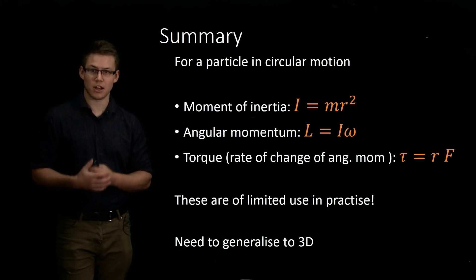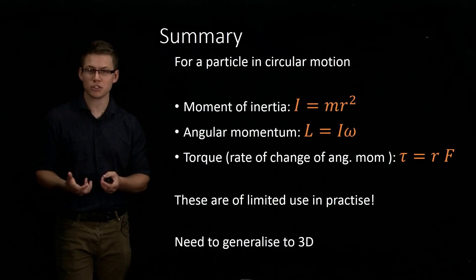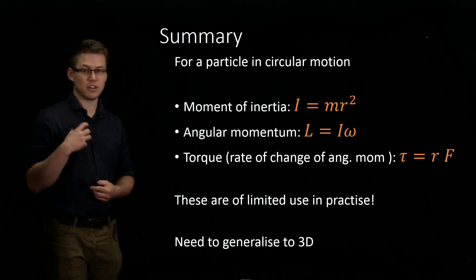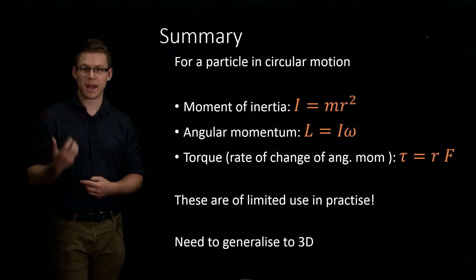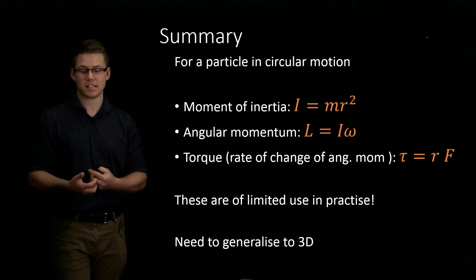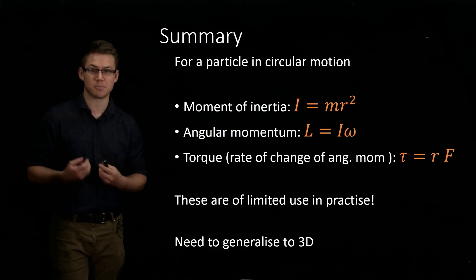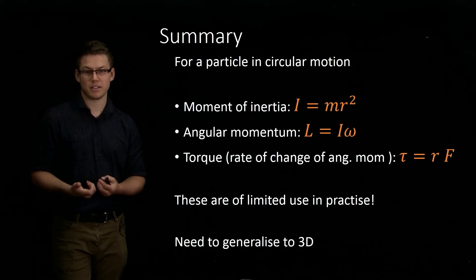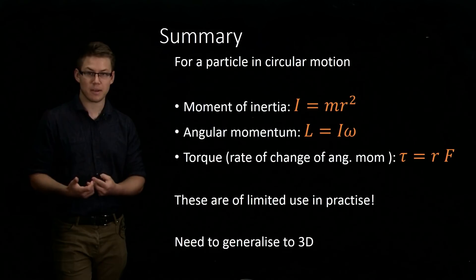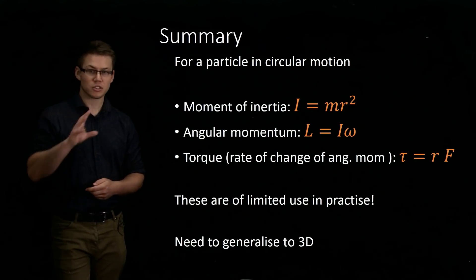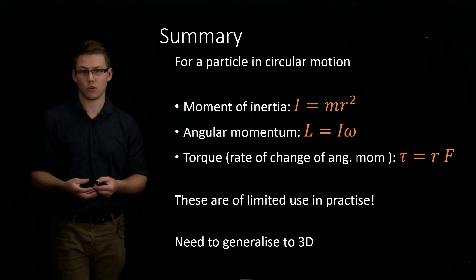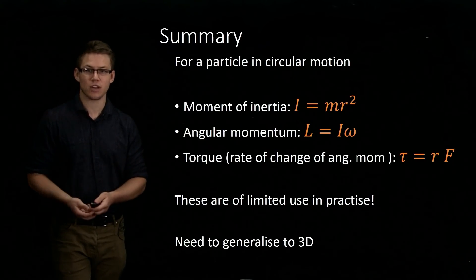Summary: we're just thinking about a particle in uniform circular motion, not worrying about vector quantities, to get an intuitive picture. The moment of inertia I equals mr² for this system and plays the role of a kind of mass. Angular momentum equals I times omega, and in analogy with standard linear momentum it captures both the mass of the system and how fast it's spinning. Finally, we have torque, which is the rate of change of angular momentum and can be expressed as r times F — very much in analogy with forces in standard linear motion. All of these equations have made some assumptions, and we're ignoring vector quantities here; we need to generalize this all to 3D, which I'll come back to in the next video.